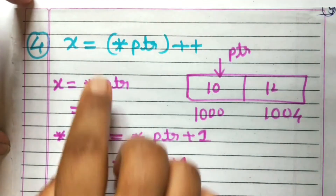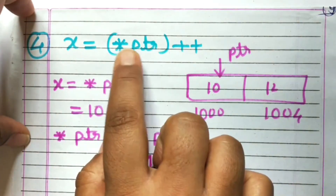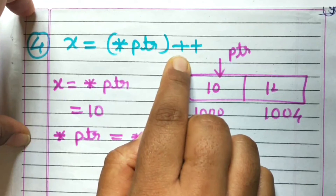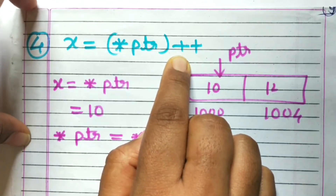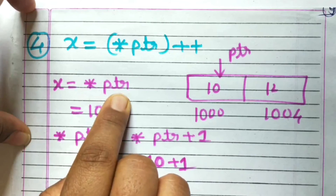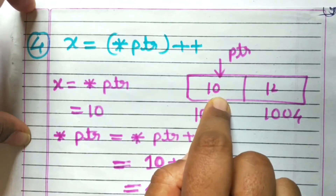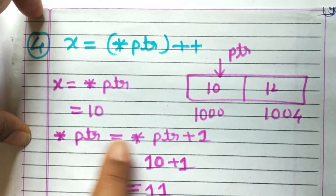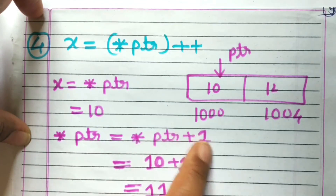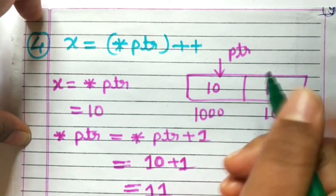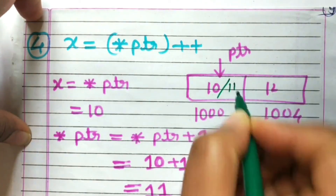Finally: x = (*ptr)++, which is a post-increment operation. So x = *PTR — the value pointed by PTR is 10 — therefore x = 10. Then *PTR = *PTR + 1, so 10 + 1 = 11. Here in the memory representation, the value 10 is replaced by 11.